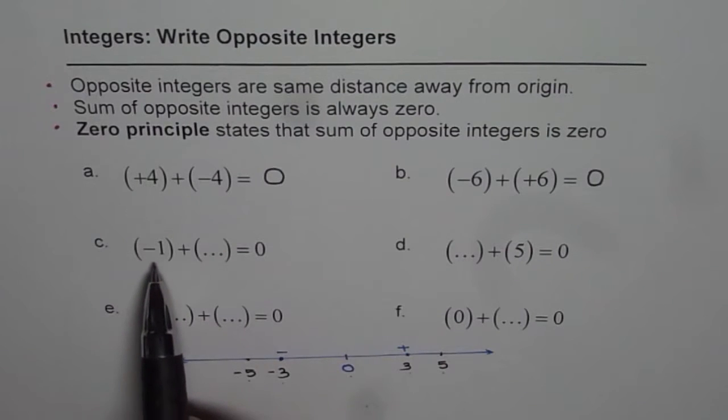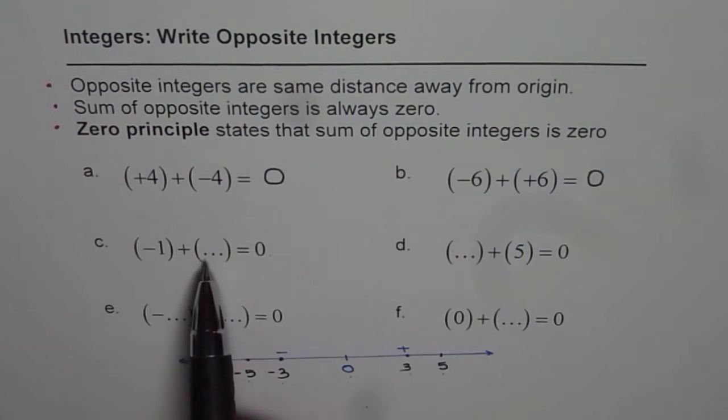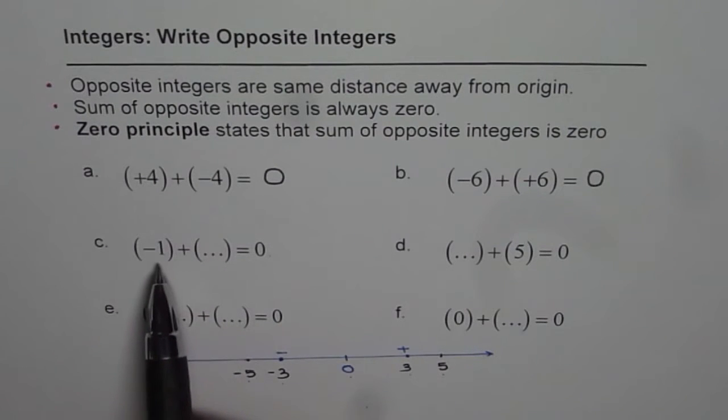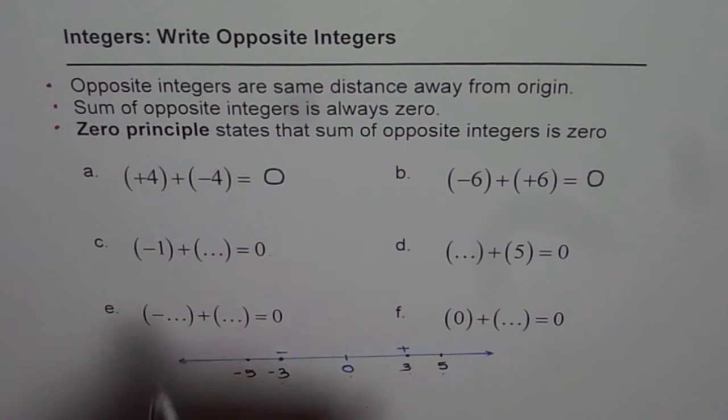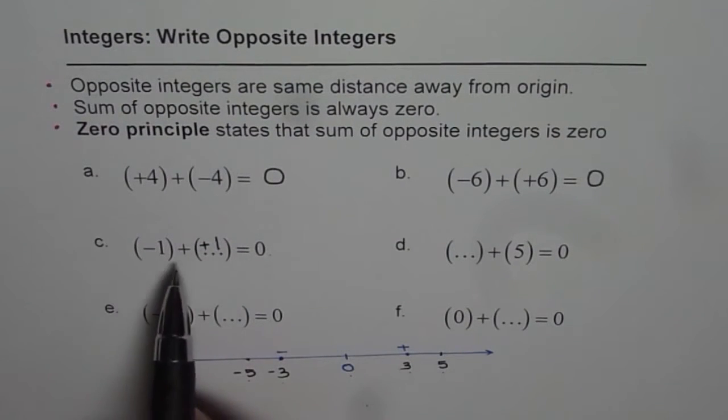Part C is minus 1 plus what is 0? Minus 1 plus opposite integer should be 0. So what is the opposite integer of minus 1? It is plus 1. So that should be plus 1. Minus 1 plus plus 1 is always 0.